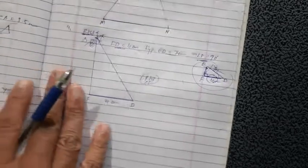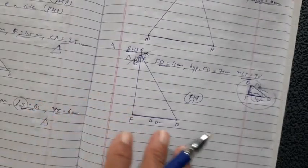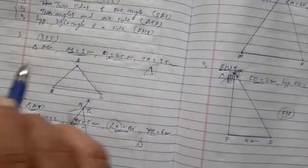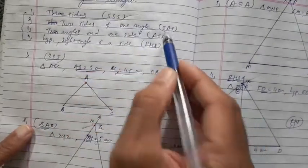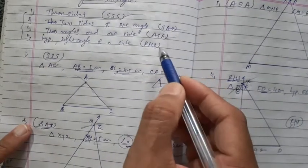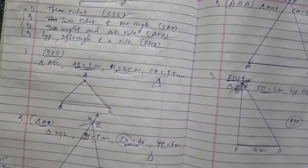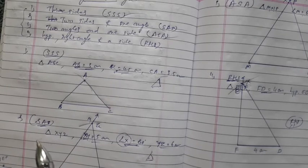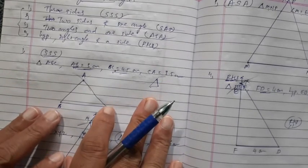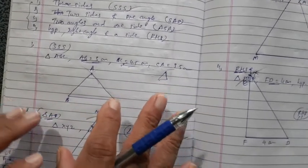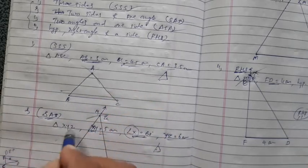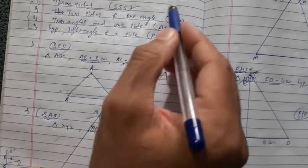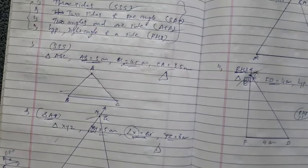So these are the constructions of triangles when different criteria are given. Four criteria are there: SSS, SAS, ASA, and RHS. In the next period, we will solve exercise 10.2. One more time, revise this and try to construct different types of triangles using these criteria. Thank you.